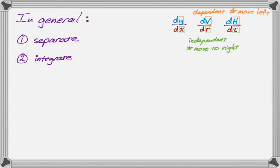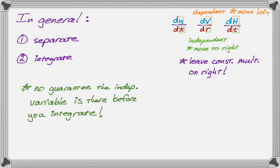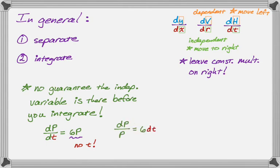There are a couple of things that can happen. One is there could just be a constant multiple, and I recommend that you always leave that on the right-hand side, because it makes it a little easier to integrate on the left-hand side. A second thing is that there's no guarantee that the independent variable is actually going to be there before you integrate — so don't freak out about it. For example, dp/dt equals 6p: there's no t on the right-hand side, but that doesn't really impact anything. I'm going to leave the constant multiple on the right, separate, and end up with dp over p equals 6 dt. Then I would just integrate both sides like entirely separate problems.